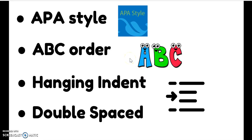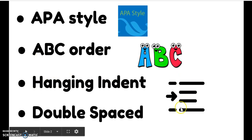What you need to know about citations is that at Roosevelt we use APA style. Citations are listed in order alphabetically. Next, citations that contain more than one line of text — the second, third, fourth, etc. lines need to be indented properly. This is called a hanging indent. I'll teach you how to do this in a moment. And finally, citations are double-spaced.